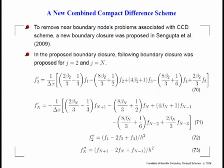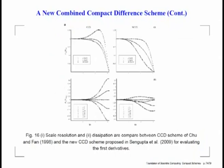We have prior knowledge of how to solve this problem: if the problems come from the implicit nature of the closure, we switch over to explicit schemes. So we replace those four implicit equations by four explicit equations — simply the explicit evaluation of f' and f'' at j equal to 2 and j equal to n — to close the system. We can manually tune constants beta_2 and beta_n to ensure good global properties.